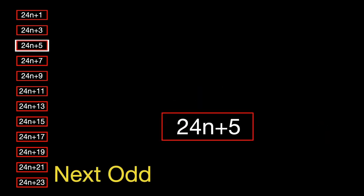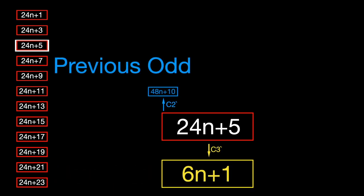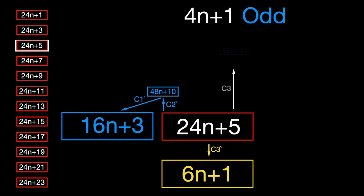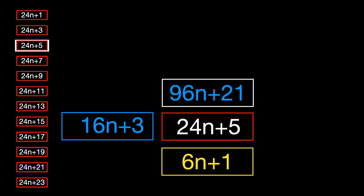5 mod 24 is a case where we have an odd number within a chain that is not divisible by 3, so it does have a preceding odd number through the inverse of C1 and C2 in addition to the preceding odd because of C3. The succeeding odd number will be found through the inverse of C3, effectively moving us down the chain.